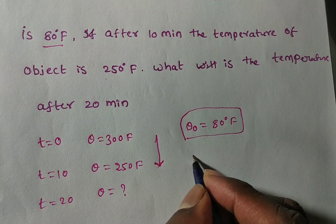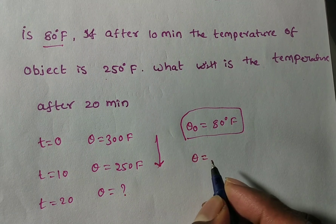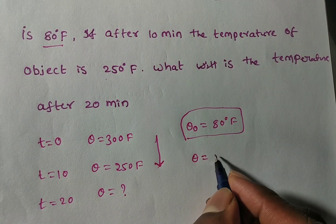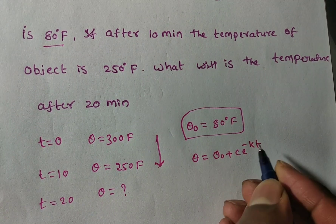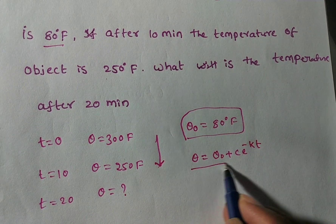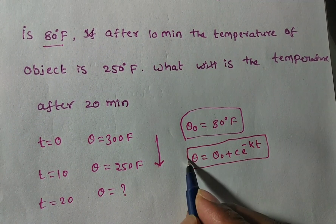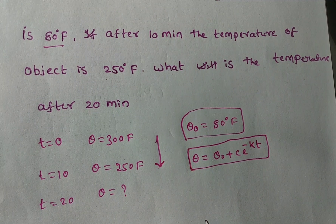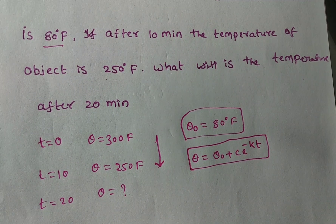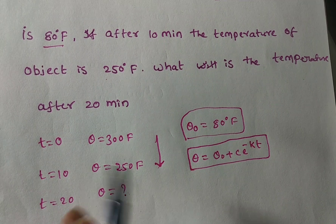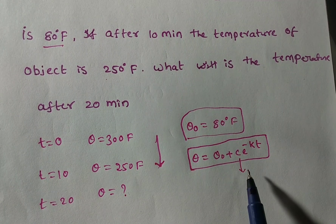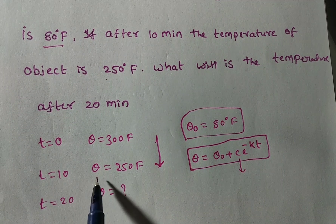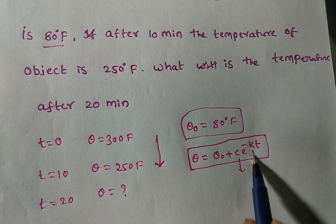The Newton's Law of Cooling formula is: theta is equal to theta naught plus C times e to the power of minus K times T. To solve this, as mentioned in earlier videos, the approach is: from the given data, first find constant C in step 1, then find constant K in step 2.